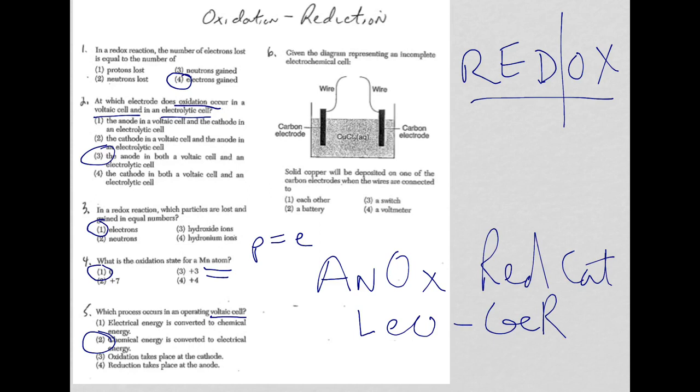And finally, for question six, we have an incomplete electrochemical cell and it says solid copper will be deposited on one of the carbon electrodes when the wires are connected to... well, this is going to be an electrolytic cell. How do I know that? Well, the easiest way to notice is that there's only one container. And when you start to take a look at more questions and you see a picture of a voltaic cell, a voltaic cell is two containers.